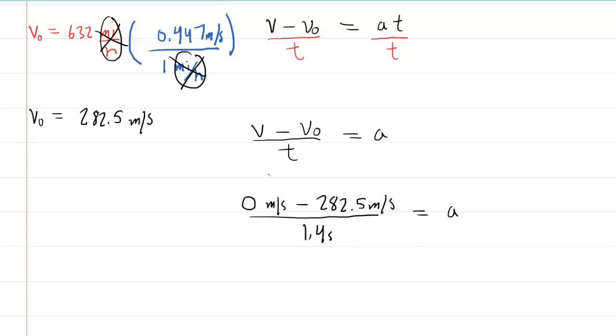And then we'll enter this into our calculator. This 0 here doesn't matter. So the numerator is just the negative 282.5. You'll divide that by 1.4 and you'll end up with negative 202, approximately. And this will come out in meters per second squared. So that would be the negative acceleration that we needed for part A of the question.